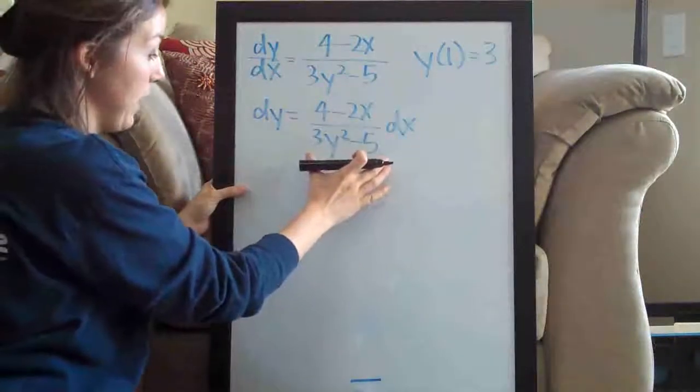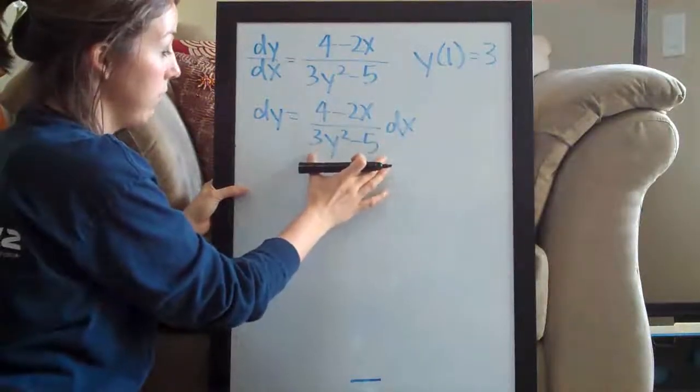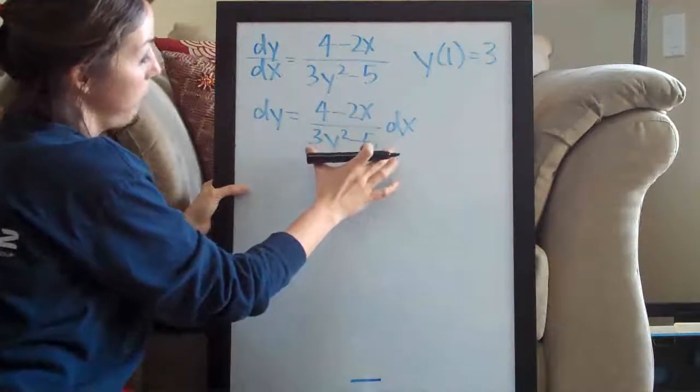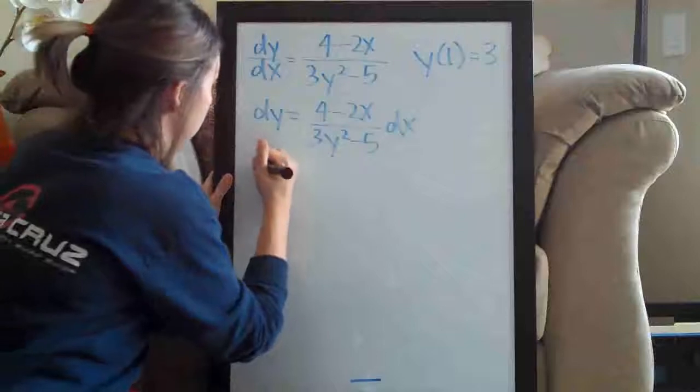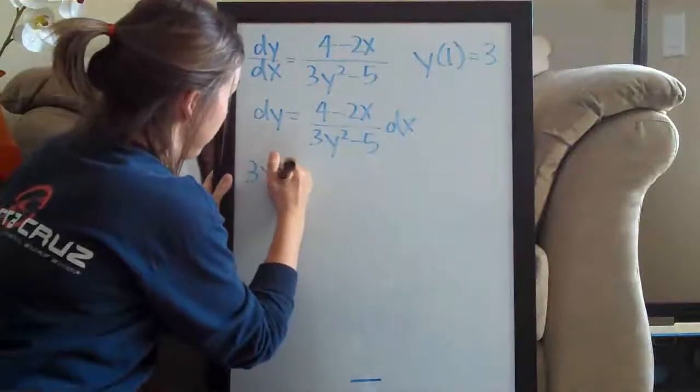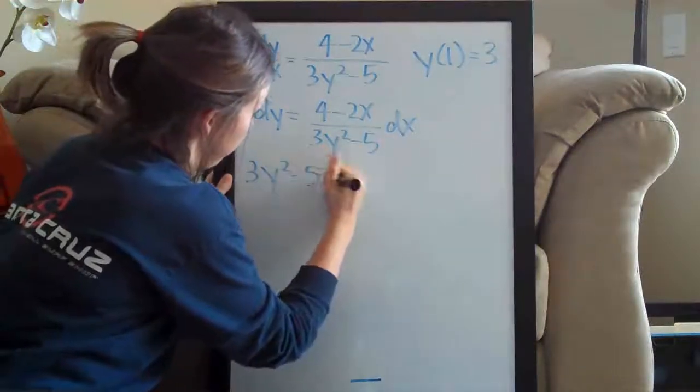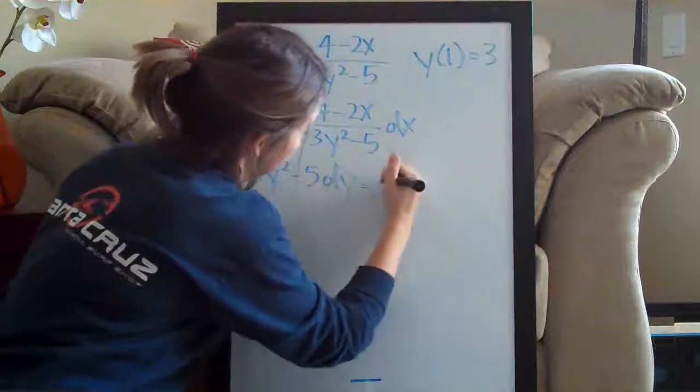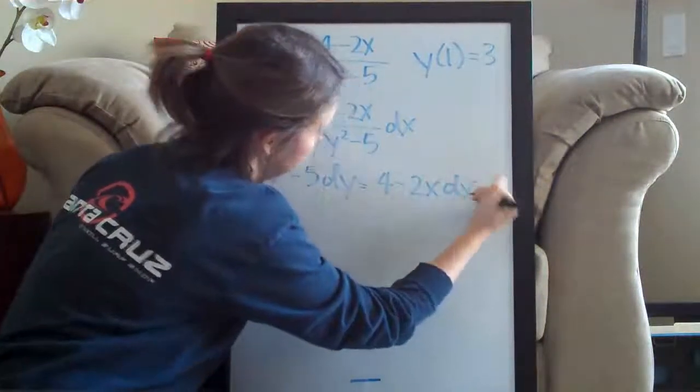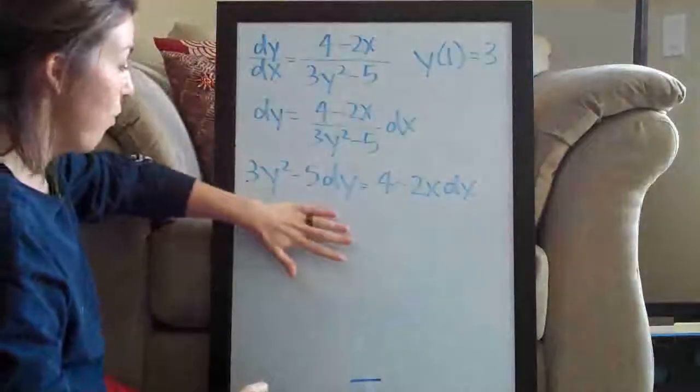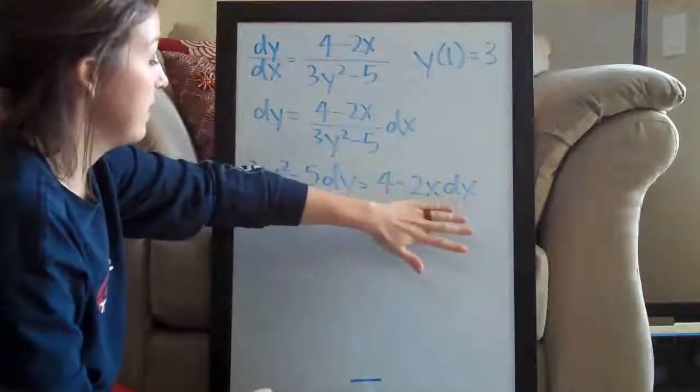Now we're going to multiply both sides by 3y squared minus 5 so that the bottom here will move over and we'll be left with x's and y's. So we'll have 3y squared minus 5 dy equals 4 minus 2x dx. So now you can see we have y's on the left side and x's on the right side.